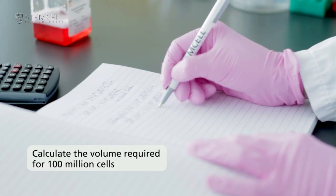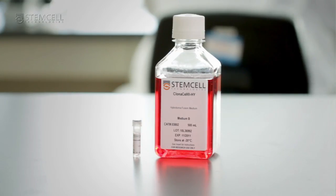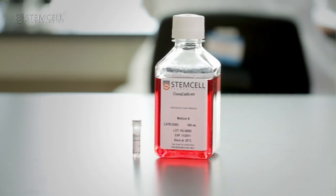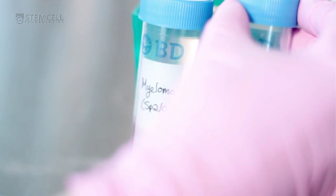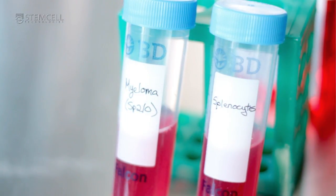Washing both myeloma cells and splenocytes with serum-free medium B is very important. If serum is not removed, PEG will not fuse the cell membranes and the fusion frequency will drop drastically. Myeloma and spleen preparation can be done at the same time to ensure that one cell type is not sitting for an extended period of time.